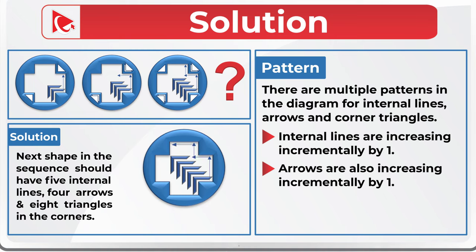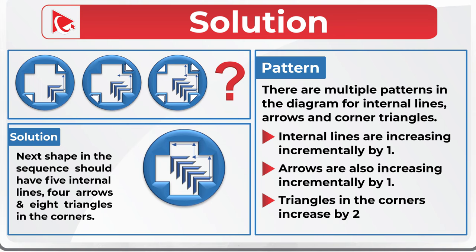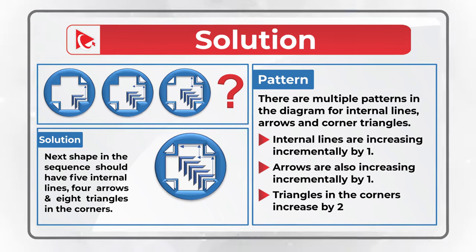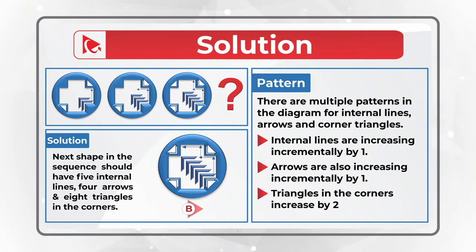The last pattern is the corner triangles. Corner triangles are increasing by two. The first object has two corner triangles, the second has four, and the third has six, which means that the next object in the sequence should have eight. Based on these calculations, the correct answer is choice B. This matches all of these patterns.